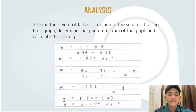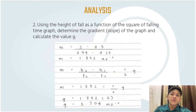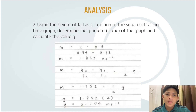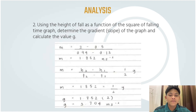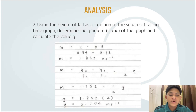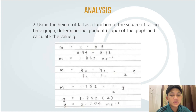For analysis number two, using the height of fall as a function of the square of falling time graph, we determine the gradient (slope) and calculate the value of g. We find the gradient using the formula: m = (y2 - y1) / (x2 - x1). Substituting values: m = (2 - 0.5) / (0.94 - 0.13), giving m = 1.852 m/s².